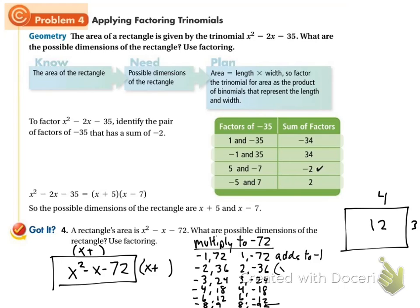So we get x plus 8, x plus negative 9, which I can simplify to be x plus 8 and x minus 9. So the dimensions are, one of the possible ones is x plus 8 by x minus 9.